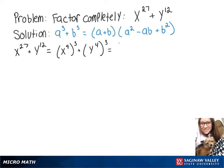Now we can rewrite that as x to the 9th plus y to the 4th, times x to the 9th squared which is x to the 18th, minus x to the 9th times y to the 4th, plus y to the 4th squared which is y to the 8th.